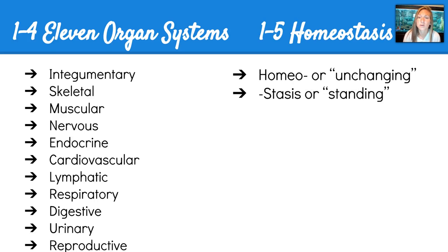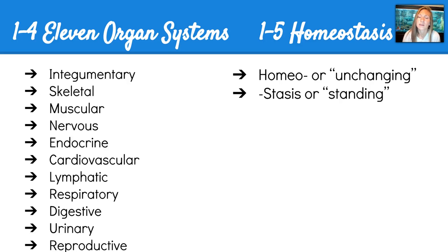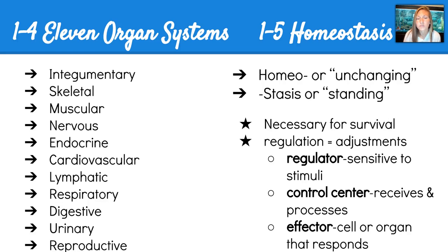Section 1-5 of the textbook should be talking about something very familiar to you, which is homeostasis. This is the ability for our internal environment to remain stable. The prefix and suffix in this term will actually be on our prefix-suffix quiz on Thursday. Homeo means unchanging and stasis means standing. So we want to keep our body within certain parameters — maintaining that perfect temperature or that perfect pH — and this is necessary for survival.